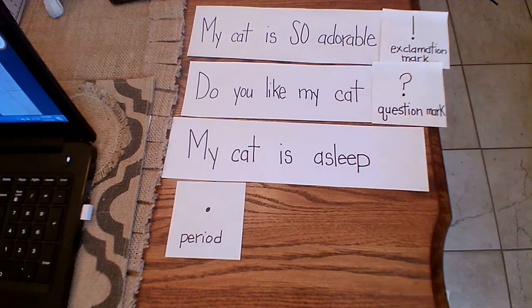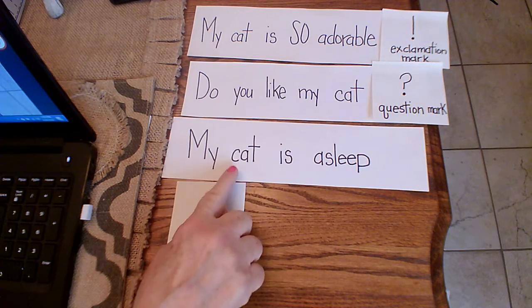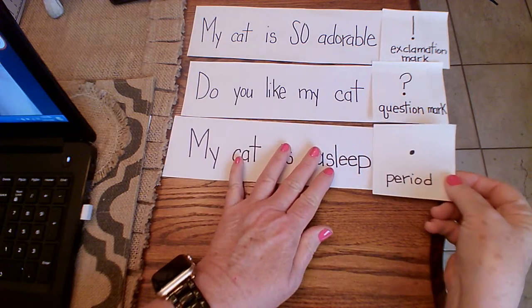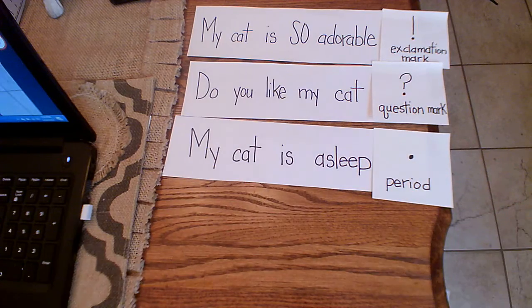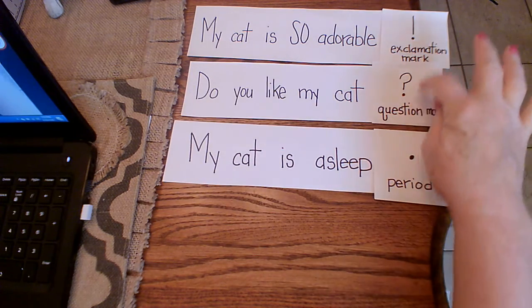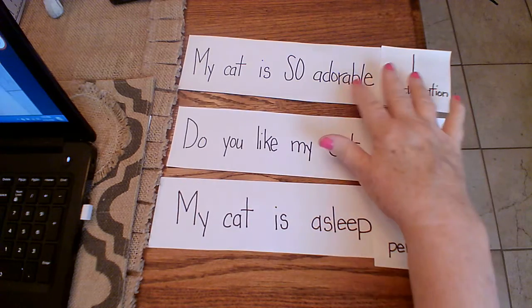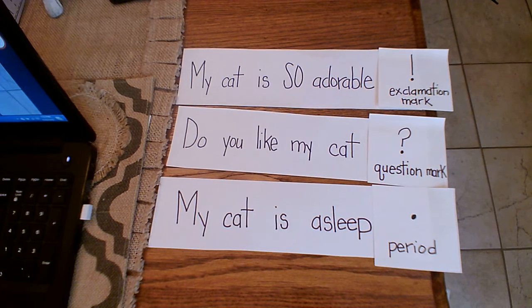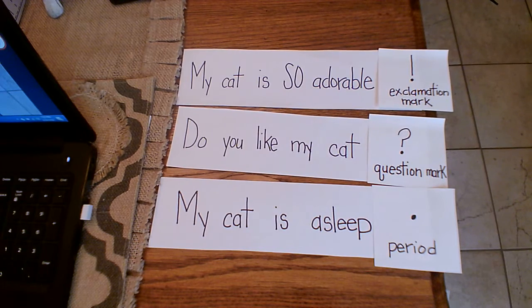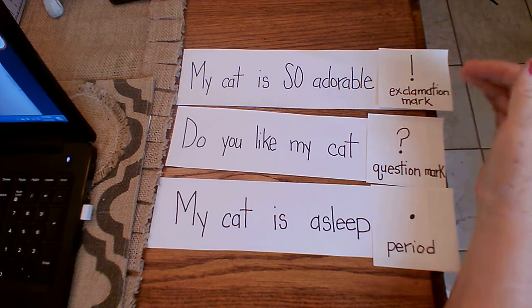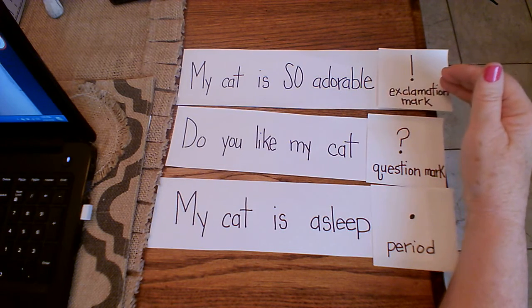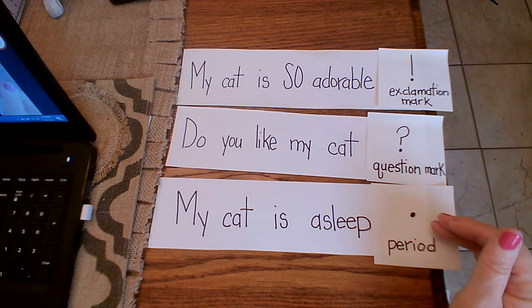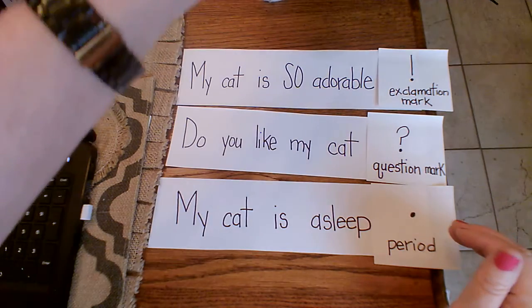So, that gets the question mark. Do you like my cat? And that leaves the last one: my cat is asleep. That is a statement. It's just telling you a piece of information. It gets the period. All right. So, exclamation mark is if you're excited or mad or angry. The question mark is if you're asking a question, and the period is for a statement where you are just giving a piece of information.